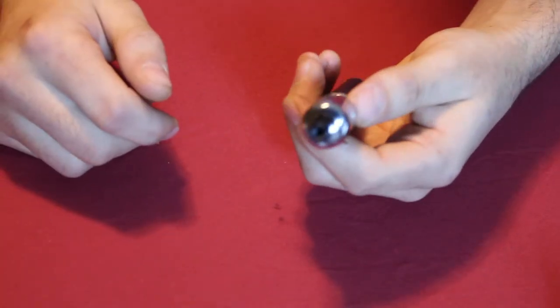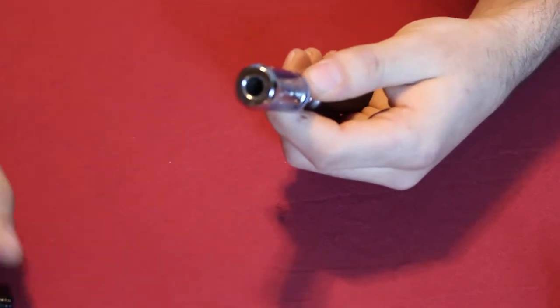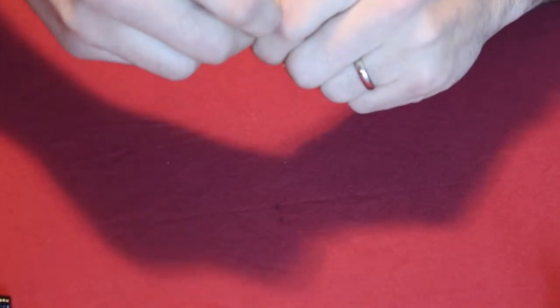So the first thing after putting the tank onto the battery, you want to remove the drip tip and then you just want to pop this.